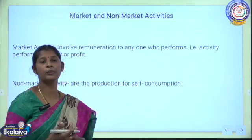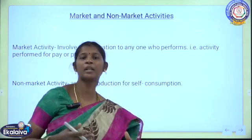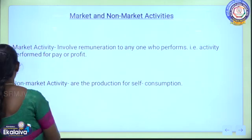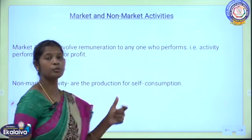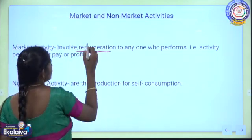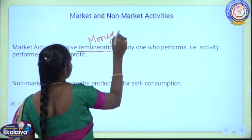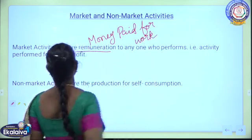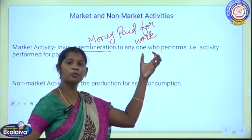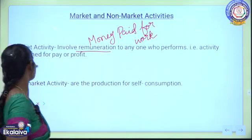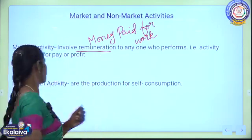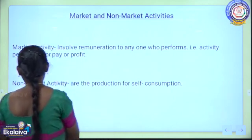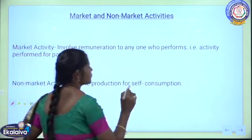Now we will look at market and non-market activity. Economic activity is also called market activity. Market activity involves remuneration to anyone who performs it — for example, an activity performed for getting pay or profit. Non-market activity, on the other hand, is production for self-consumption; it is not for sale but for personal or family use.